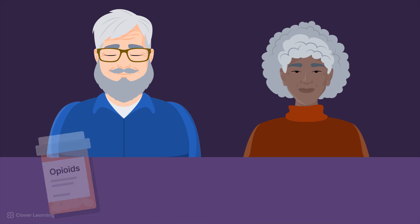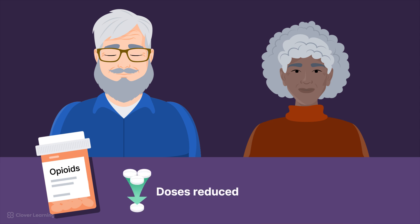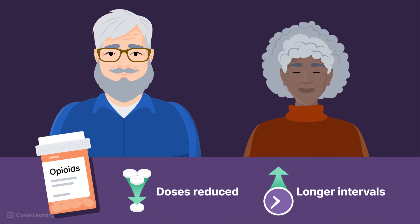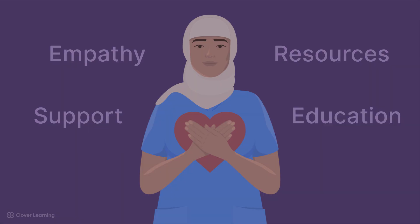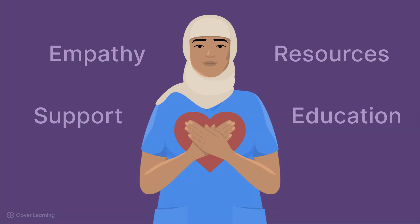The elderly often experience decreased liver and kidney function, making them more susceptible to drug accumulation and overdose. In general, it is recommended that doses of opioids be reduced with longer dosing intervals for the elderly to prevent drug accumulation, overdose, and reduce the side effects of opioids.